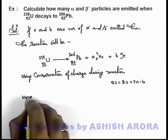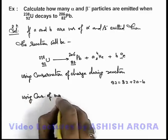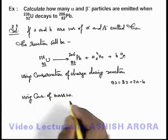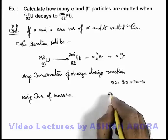And similarly we can write using conservation of mass number because total number of nucleons must remain same. Here we can see initially number of nucleons 238...